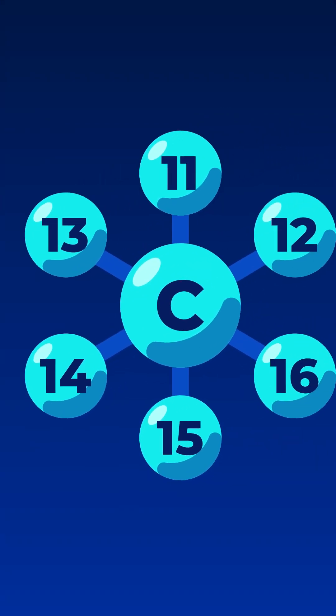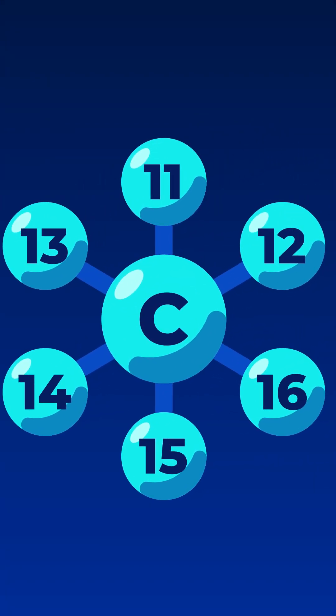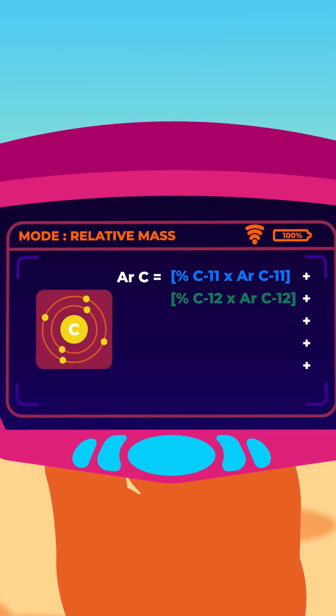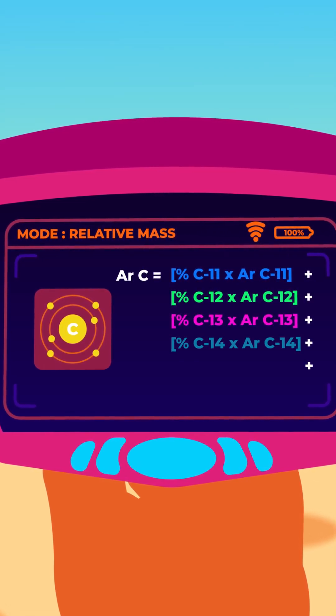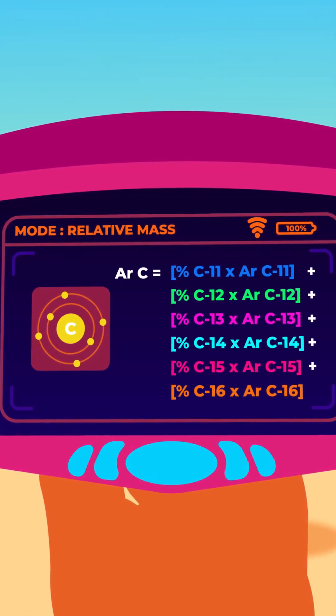Now, most of the elements naturally exist as mixtures of different isotopes. Thus, to obtain the relative atomic mass of an element, we need to calculate it based on the abundance of each of the element's isotopes.